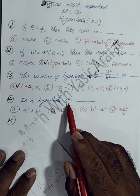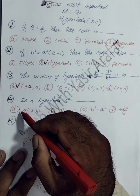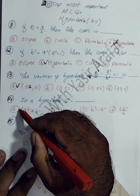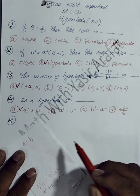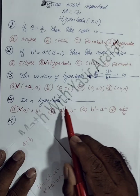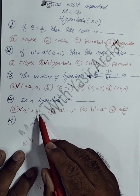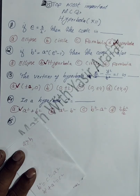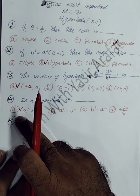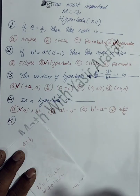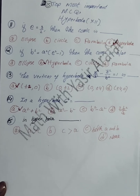The fourteenth MCQ: in a hyperbola, C² = A² + B². This is the standard formula for hyperbola. So option A is correct for the fourteenth MCQ.